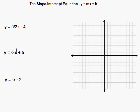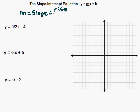We're given three equations in this form, y equals mx plus b, and we're going to use the information, the m and the b, to graph the lines. Now, remember from last week, m represents the slope of the line. Remember, that's the rise over the run, or the vertical change over the horizontal change.